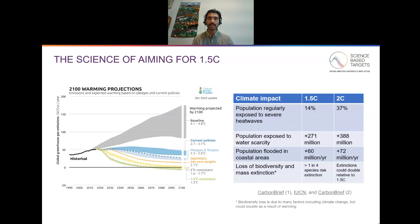So let's look at the science of aiming for one and a half degrees. It's worth noting that SBTI's net zero standard really does revolve around this more ambitious goal of the Paris Agreement. Part of the reason why is that with the publication of the special report on global warming of one and a half degrees, many of us came to understand that the climate impacts of this level of warming are worse than we had thought.